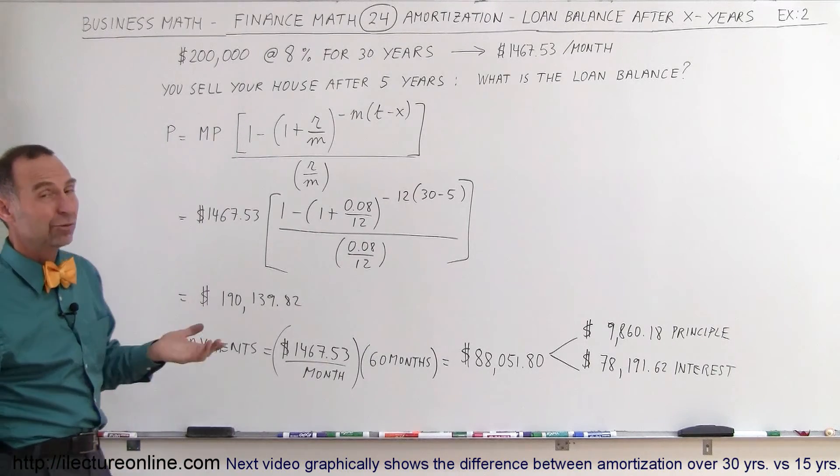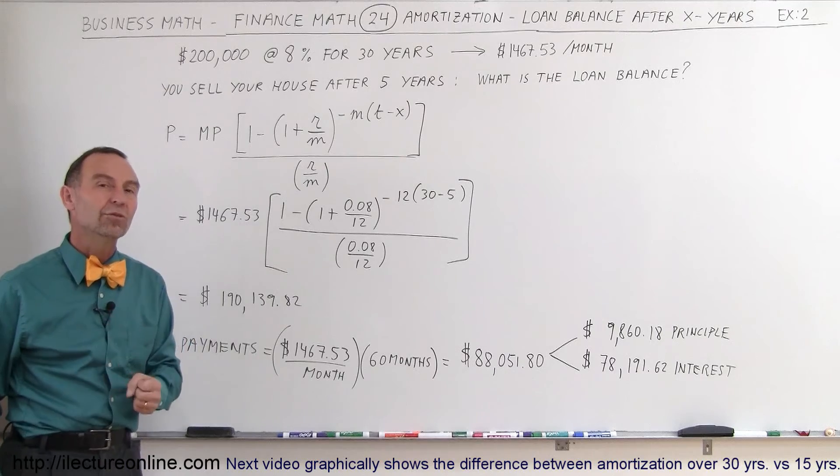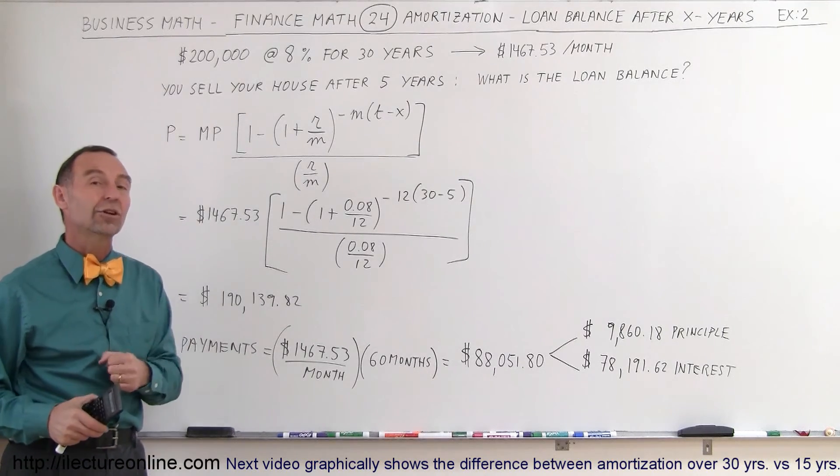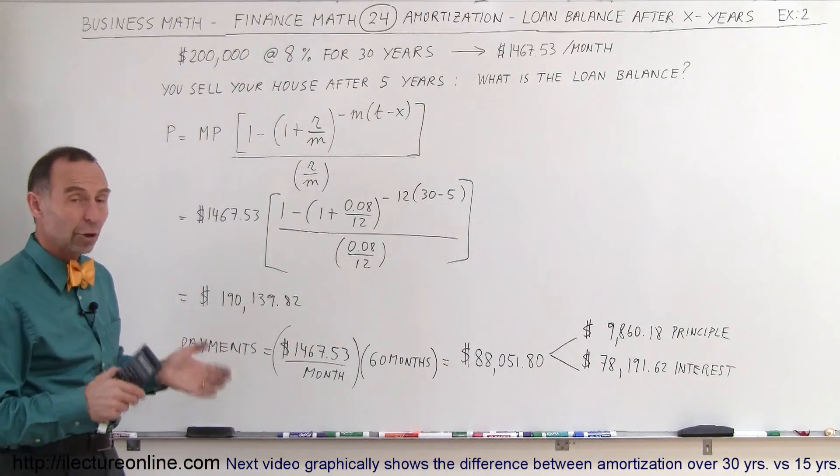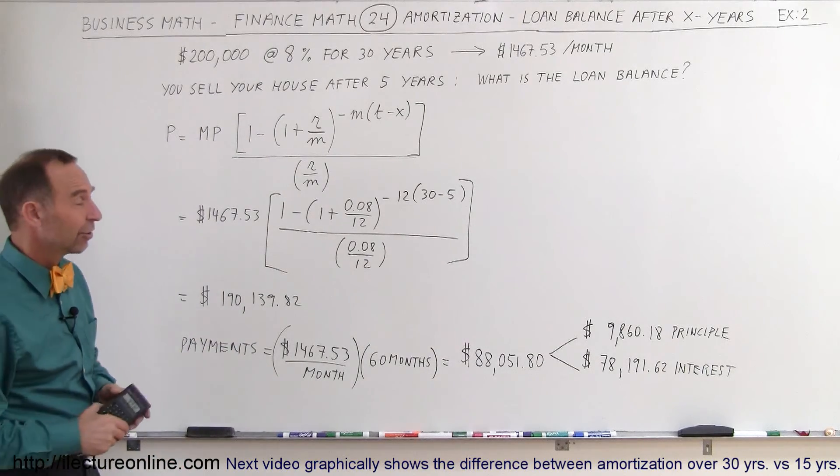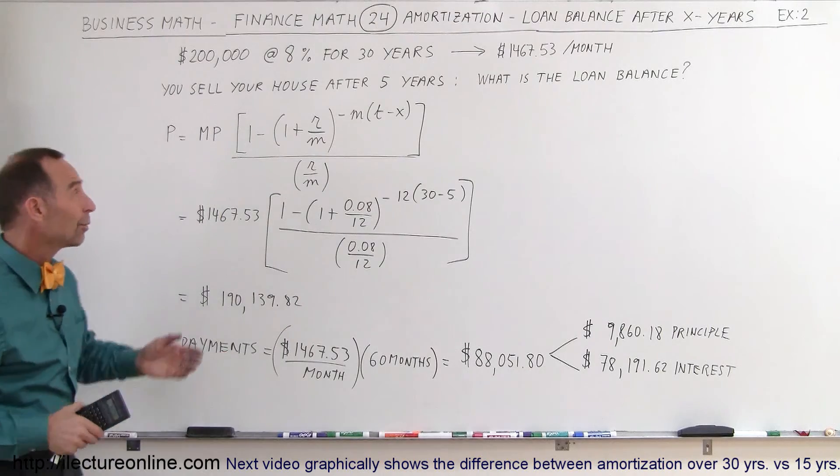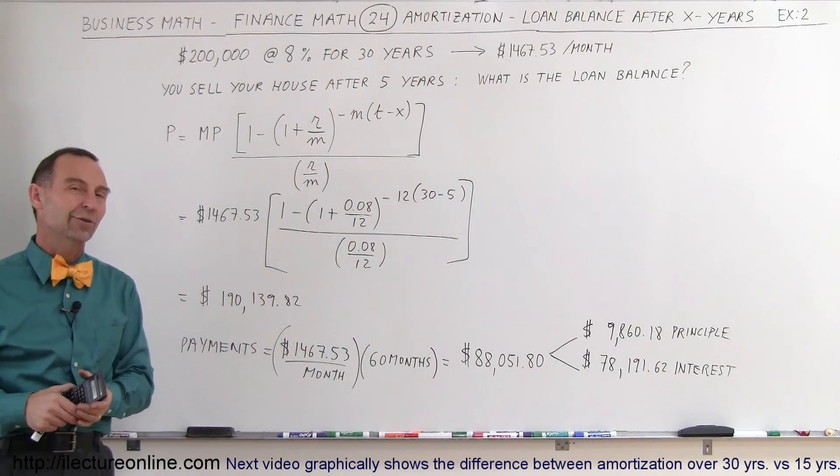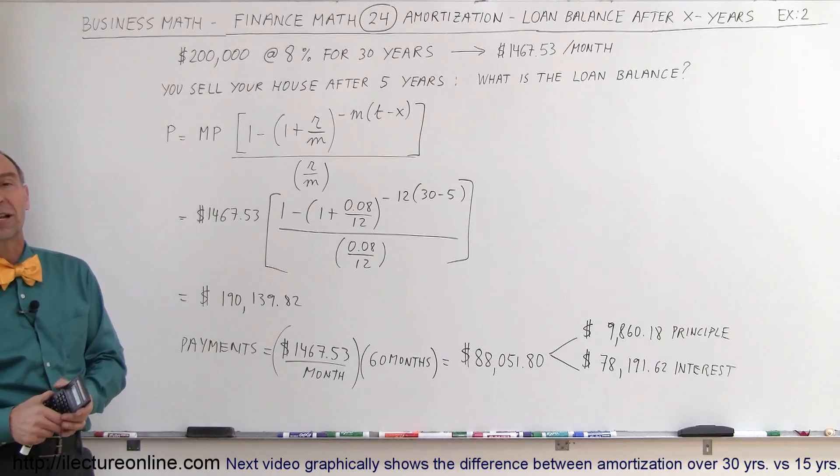When the interest rates are high, buying homes is very tough. And the financial situation of buying homes is not as good as when the rates go down. So that's why low rates are good, high rates are not so good. And you can see why in the equation when we calculate the principal remaining after a certain number of years of making those high payments. And that's how we figured it out.